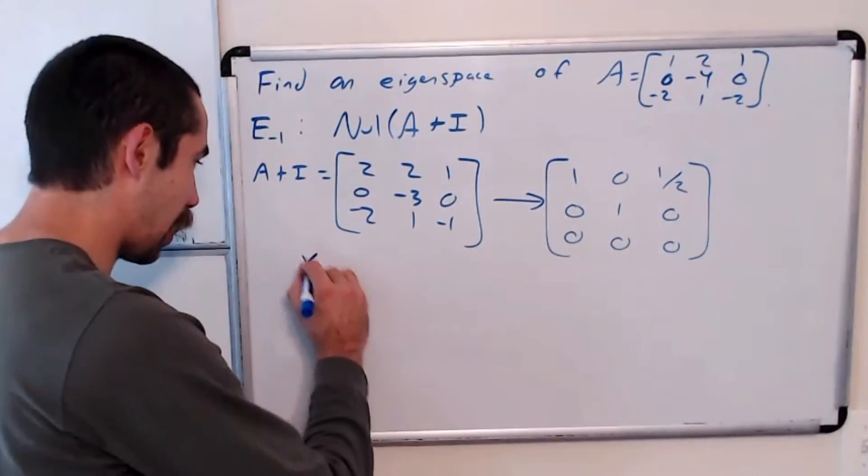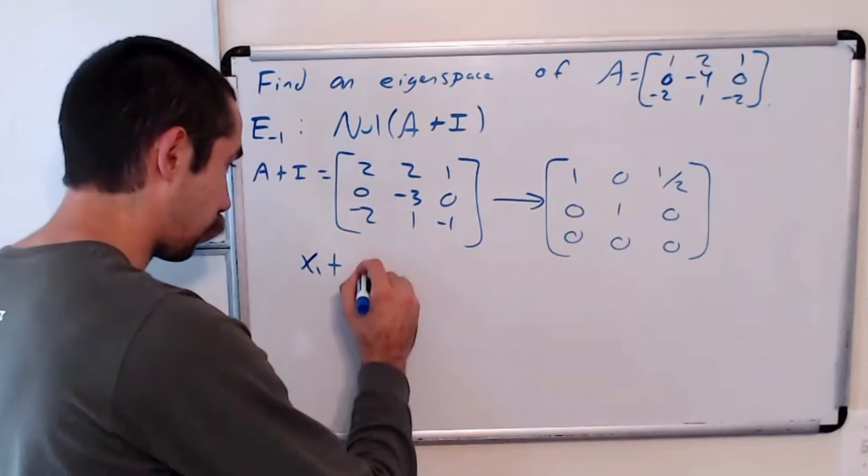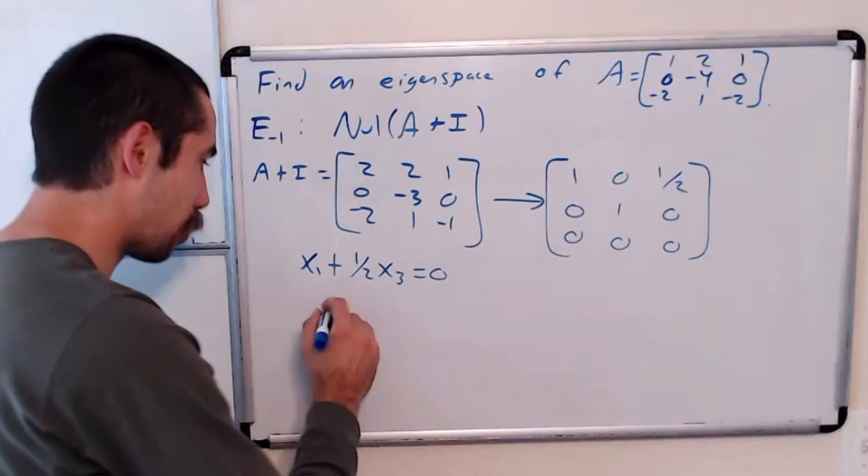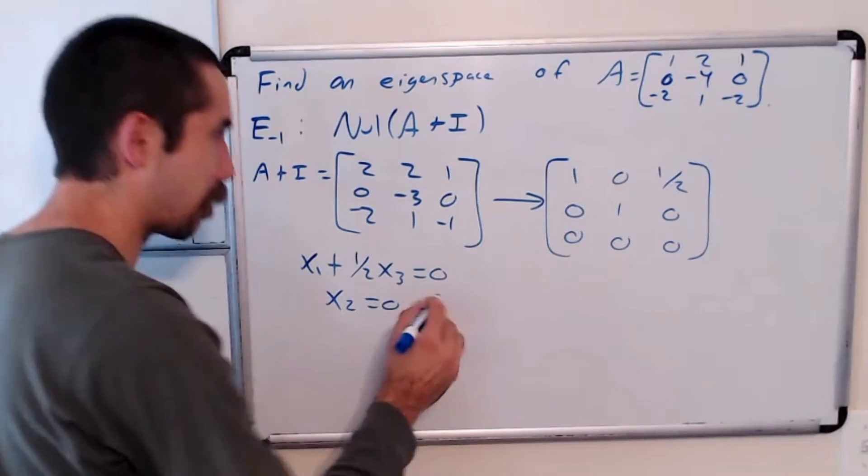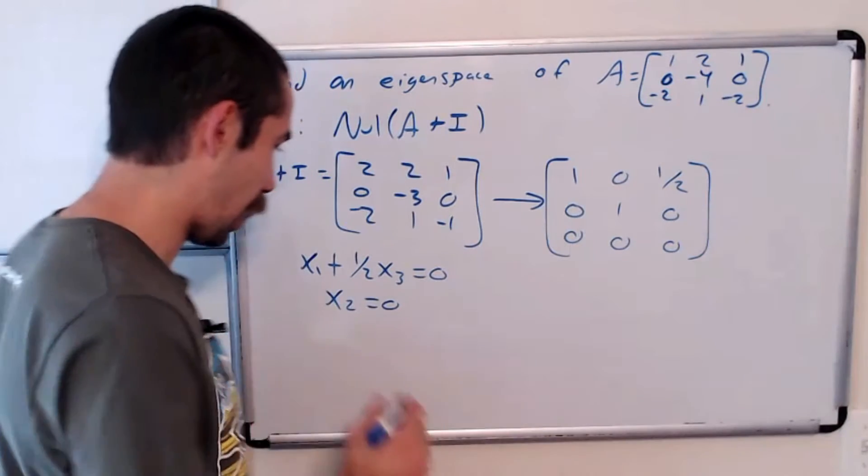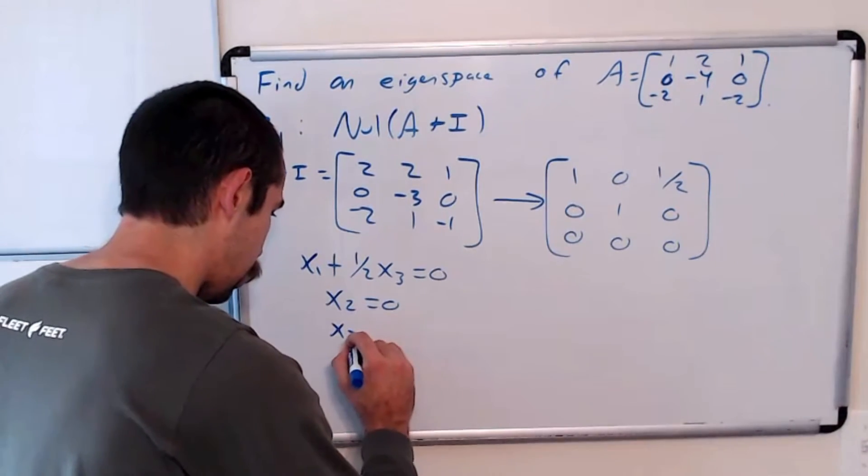This top row says that x1 plus 1 half x3 is equal to 0. The next row says x2 is equal to 0. And we can see, since there's no leading 1 in this third column, that x3 is free.